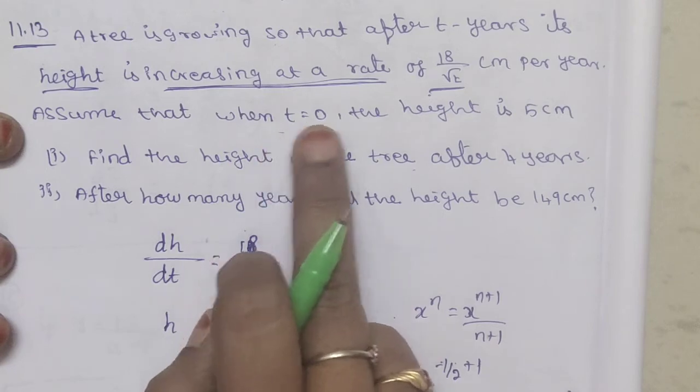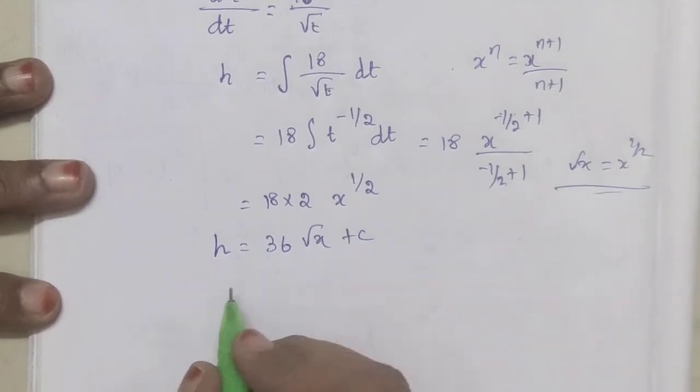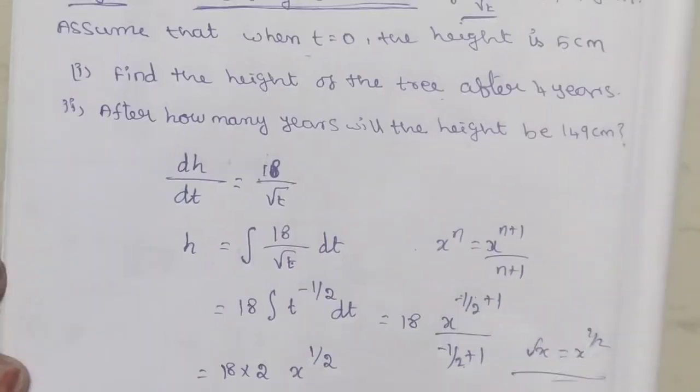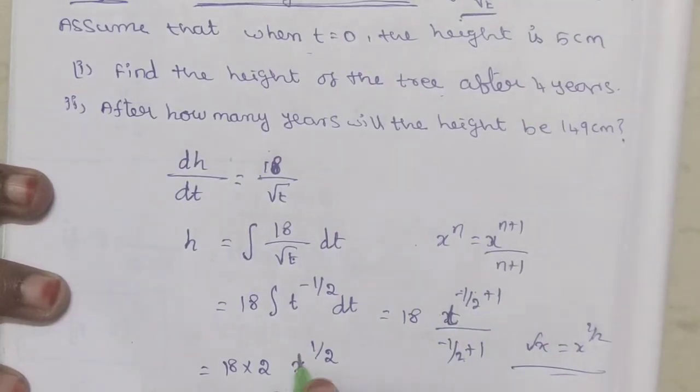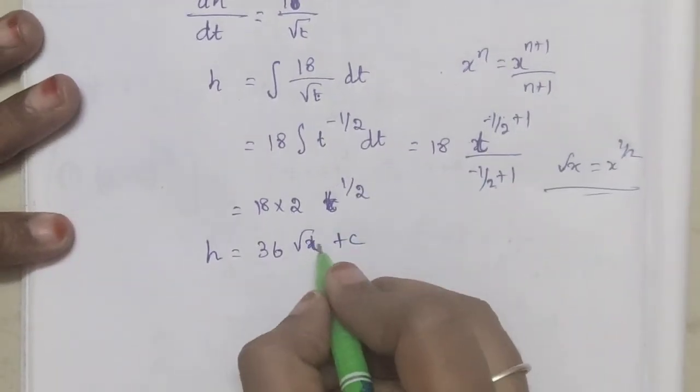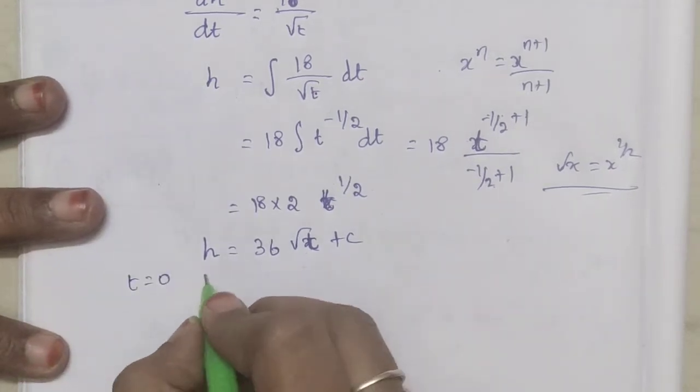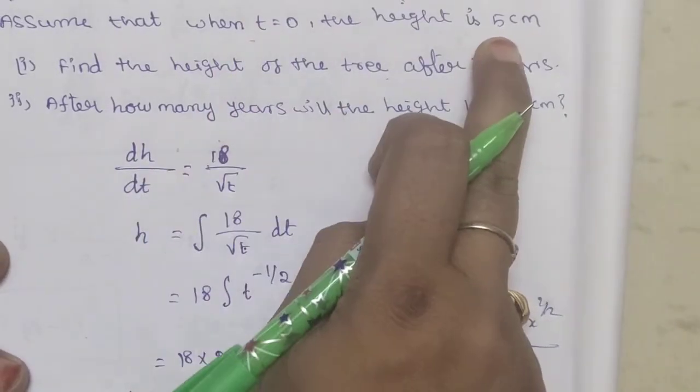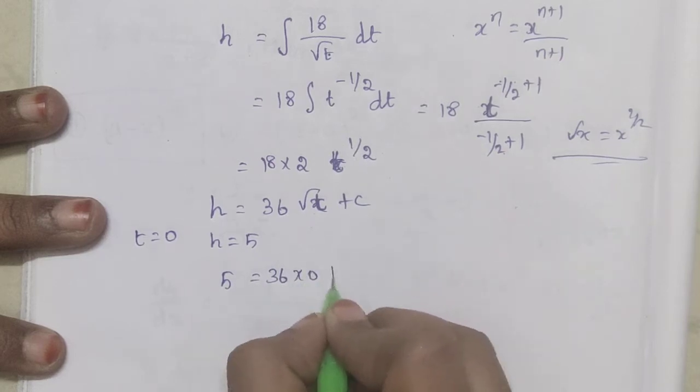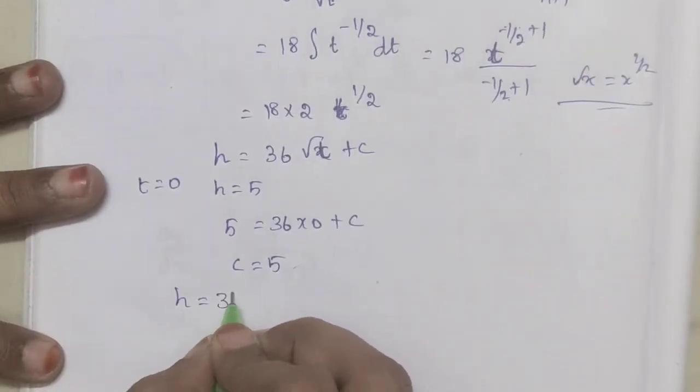Assume that when t equals 0, height is 5 cm, so h equals 36√t plus C. Substituting t equals 0 and h equals 5, we get 5 equals 36 times 0 plus C, so C equals 5. Therefore h equals 36√t plus 5.